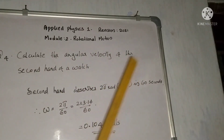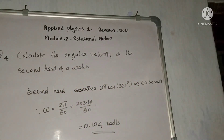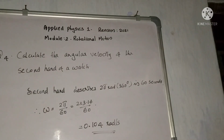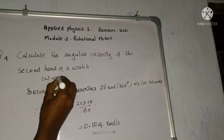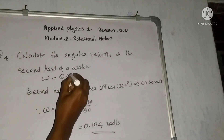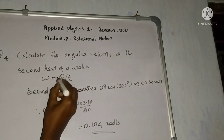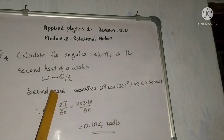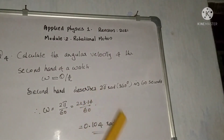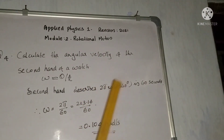Next problem: calculate the angular velocity of the second hand of a watch. Angular velocity is angular displacement divided by time. The second hand completes 2π radians in 60 seconds.